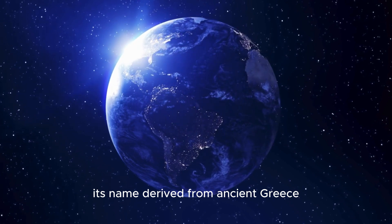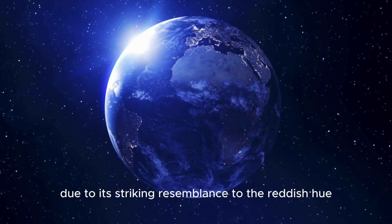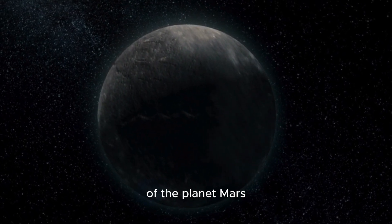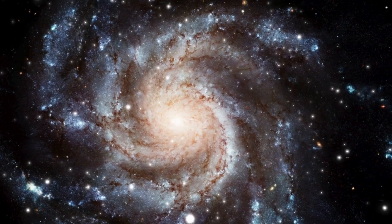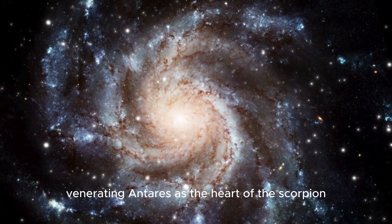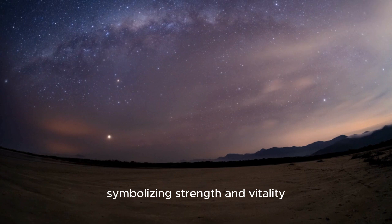The historical significance of Antares adds another layer of intrigue. Its name, derived from ancient Greece, means rival of Mars, due to its striking resemblance to the reddish hue of the planet Mars. This association with warfare endured through the ages, with Babylonian astronomers venerating Antares as the Heart of the Scorpion, symbolizing strength and vitality.